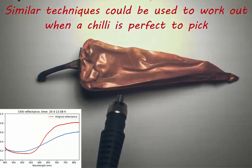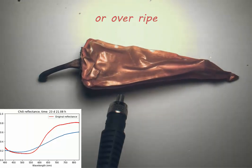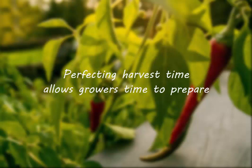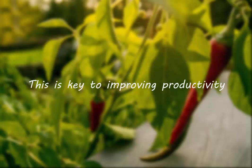These colour changes could be used to work out when a chilli is perfect to pick or when it is overripe. Picking the right time to harvest can allow growers time to prepare and guarantee a perfect product at market. This is key to improving their productivity.